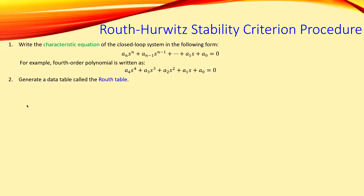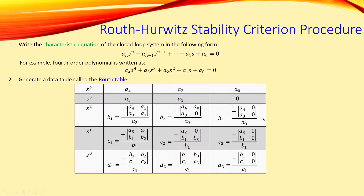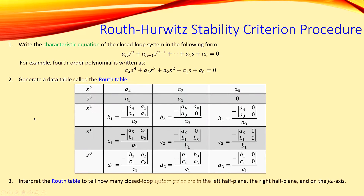The second step is to generate a data table called the Routh table, which is shown here for the fourth-order system. As you can see, a4, a3, a2, a1, and a0 are already placed in standard form. If you don't have a next term, you simply place a zero. The final step is to interpret your Routh table to determine how many closed-loop poles are in the left-hand plane, the right-hand plane, and on the imaginary axis. If you're interested in stability, you only need to look at the right-hand plane poles.